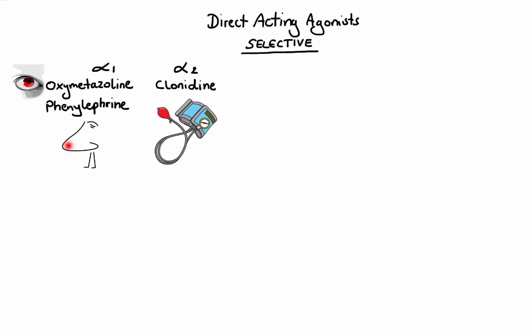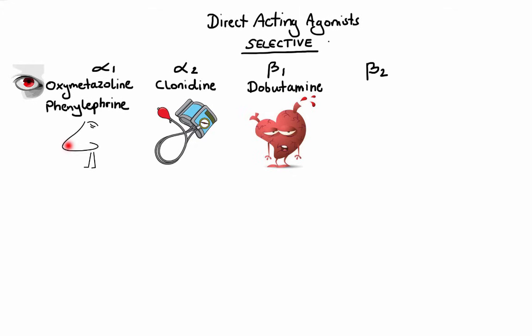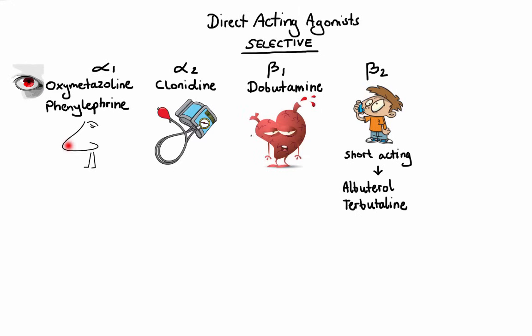Now let's move on to beta-1 selective agonists. The best example is dobutamine. As you may recall, beta-1 receptors are mainly found in cardiac tissue, so dobutamine increases cardiac rate and cardiac output, which is why it is used to treat acute heart failure. Next, we have beta-2 selective agonists, which stimulate beta-2 receptors predominant in lungs and lead to bronchodilation. These agents are classified by length of action. We have short-acting beta-2 agonists such as albuterol and terbutaline, which are used for relief of acute asthma symptoms, and long-acting beta-2 agonists such as salmeterol and formoterol, which produce prolonged bronchodilation and are used to prevent asthma attacks.